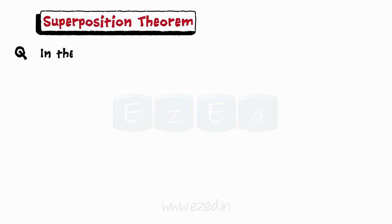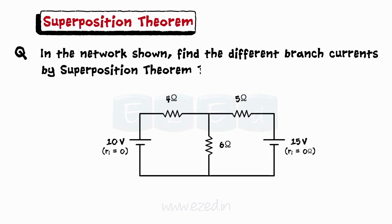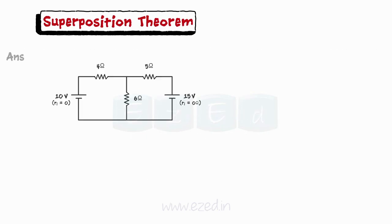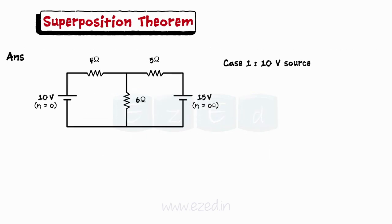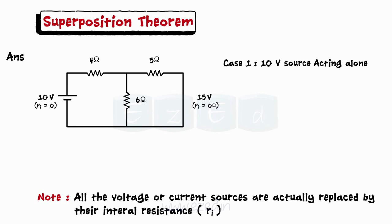Let's solve an example on this theorem. In the network shown, find the different branch currents by Superposition Theorem. Consider the 10V source acting alone and replace the 15V source by a short circuit. The network then looks as shown. We have two resistors of 5 Ohms and 6 Ohms in parallel.